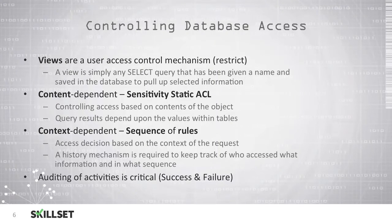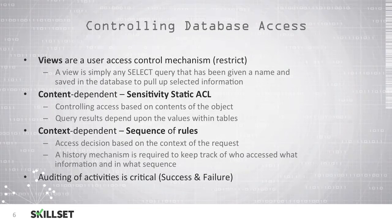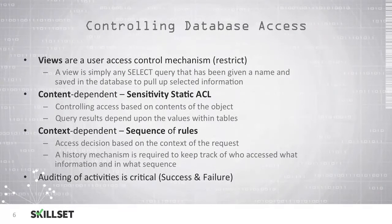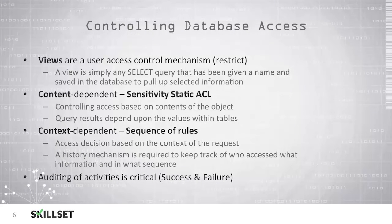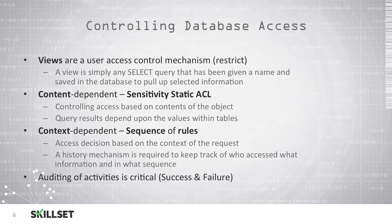There are several ways you can control database access. A view is a user access control mechanism to restrict users so that they can only pull up certain information in the database. Content-dependent controls are based on the sensitivity of the data and allow you to have a static access control list, which states which users are permitted to access that data. Here you're controlling the access based on what is in the object itself, and the query results depend upon the value in the table and who is authorized to view that data.